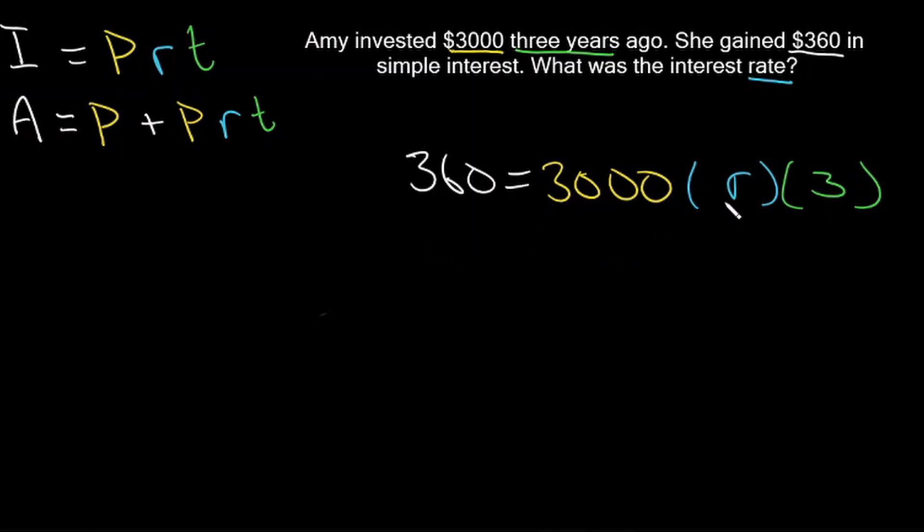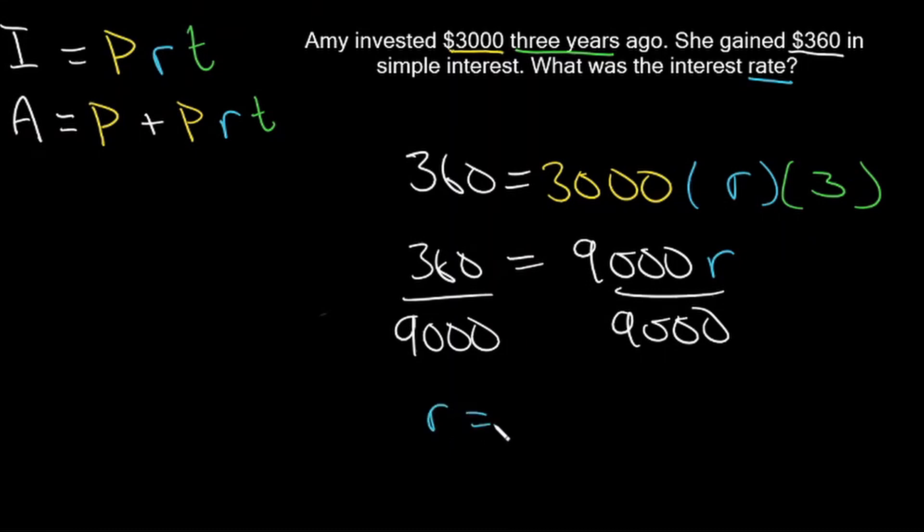So let's see if we can simplify this and solve for r. 3,000 times 3, that's going to be equal to 9,000. Now we can divide both sides by 9,000 to solve for r. So r is going to be equal to 0.04. But we can also write this as a percentage by multiplying by 100. R is equal to 4%. So our interest rate was 4%.